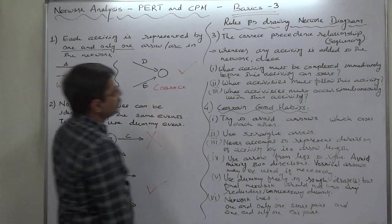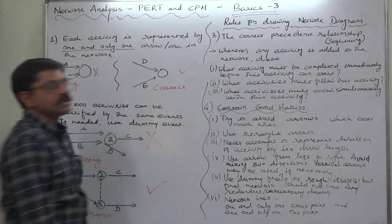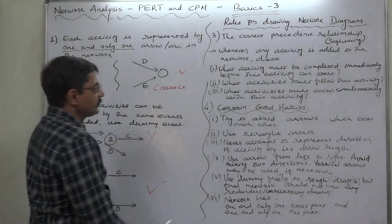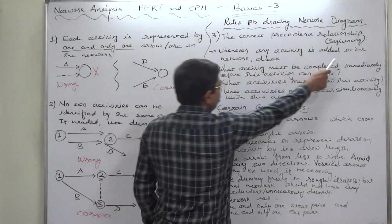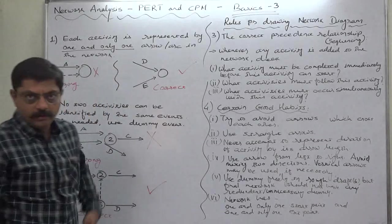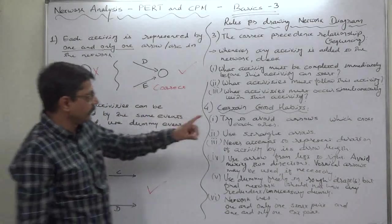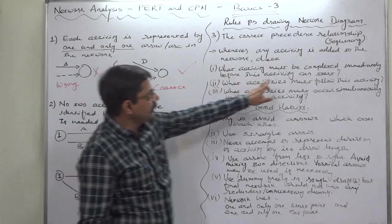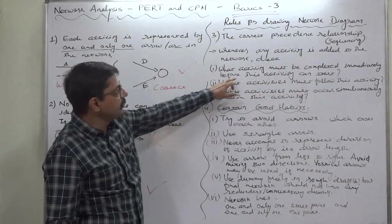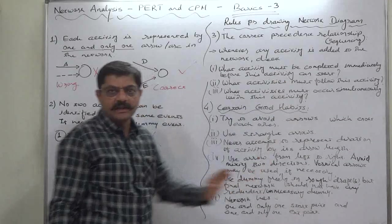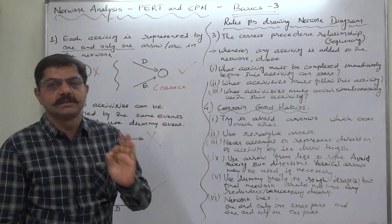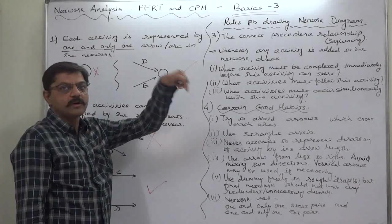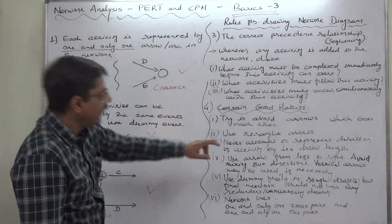The third point is the correct precedence relationship, that is also known as sequencing. Whenever any activity is added to the network, check there are three questions. Number one, what activity must be completed immediately before this activity can start? That means, think about the predecessor or predecessors of the activity which we are going to introduce or add to the network.